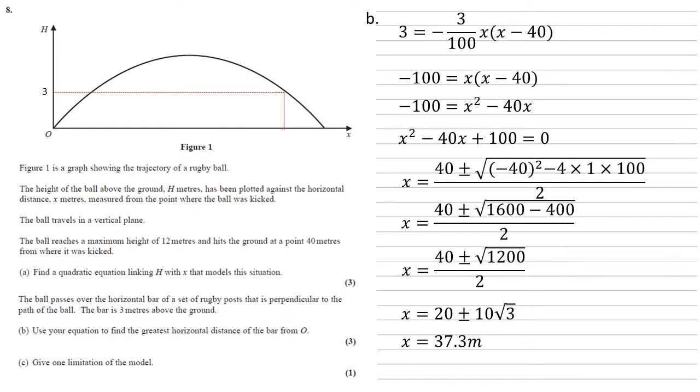We now need to give one limitation of the model. There are many limitations that we can pick. For this one I've gone with the fact that there's no air resistance. This is generally a good one to pick in any model that is modelling travel, whether that's rugby ball, transport, anything like that. The fact that our model doesn't show air resistance is a good one to pick.